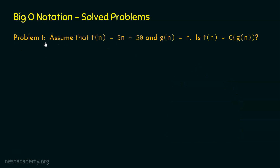Here comes the first problem. Assume that F(n) is equal to 5n + 50 and G(n) is equal to N. Is F(n) equal to Big O of G(n)? Can we say G(n) is asymptotically bigger than F(n)? We can observe that F(n) is currently bigger than G(n). Is there any chance that after N₀, C · G(n) becomes greater than F(n)? Before I give you the solution, I want you to pause the video and try to solve this problem on your own.